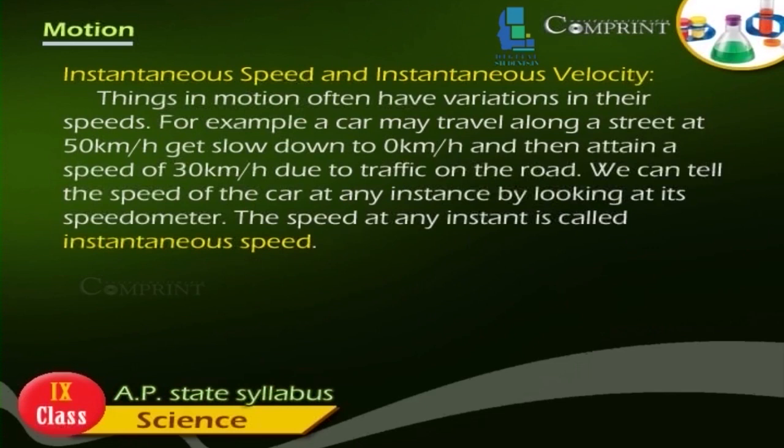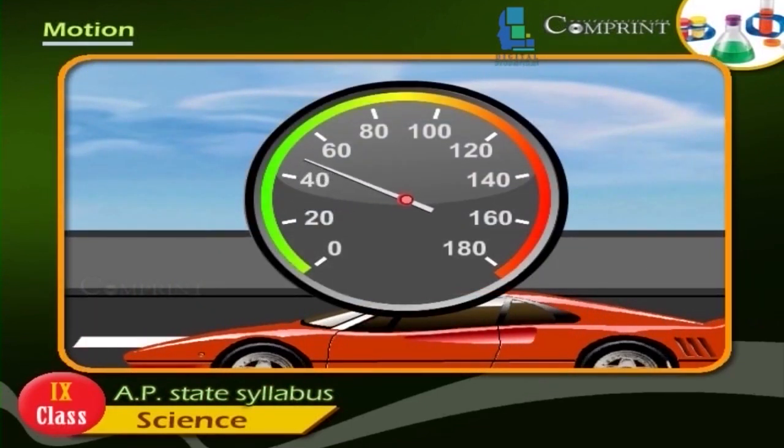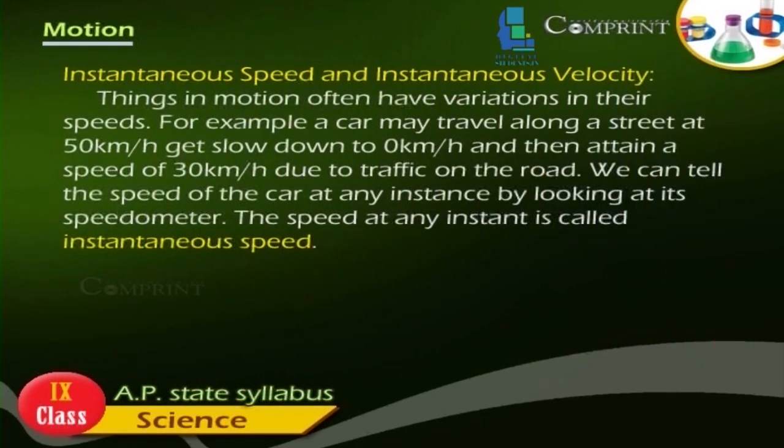Instantaneous speed and instantaneous velocity: Things in motion often have variations in their speeds. For example, a car may travel along a street at 50 km per hour, get down to 0 km per hour, and then attain a speed of 30 km per hour due to traffic on the road. We can tell the speed of the car at any instance by looking at its speedometer. The speed at any instance is called instantaneous speed.